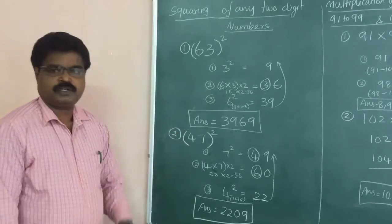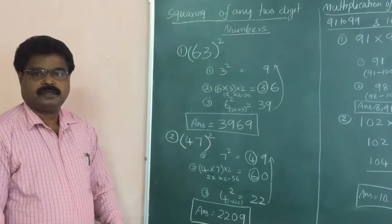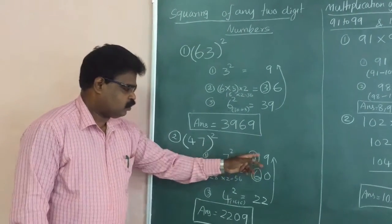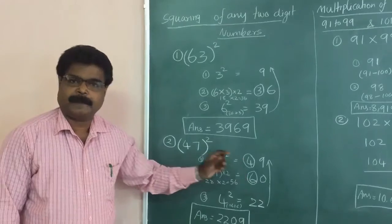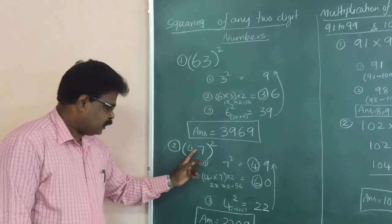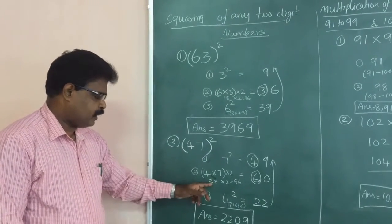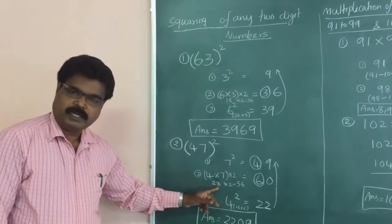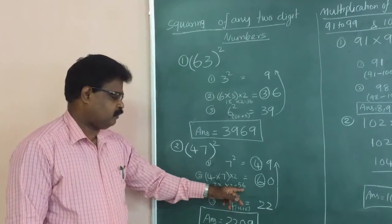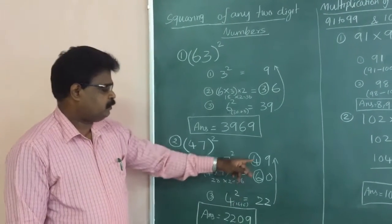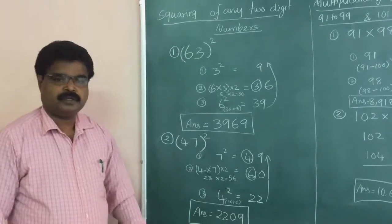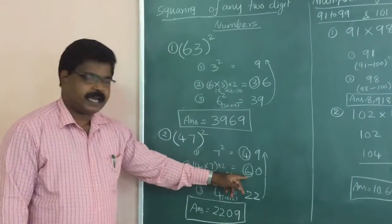Second example: 47 squared. First, square the units digit — 7 squared equals 49. Here the 4 is a carry. Next, 4 into 7 equals 28. Multiply 28 by 2, that is equal to 56. So 56 plus the carry 4 equals 60. Here 6 is a carry.